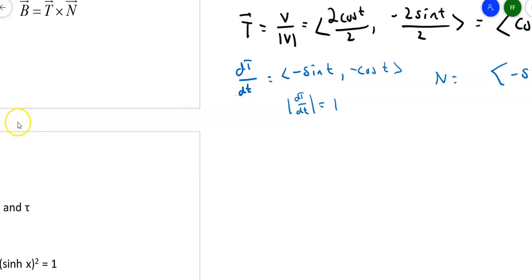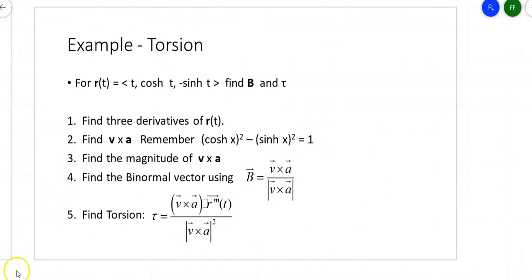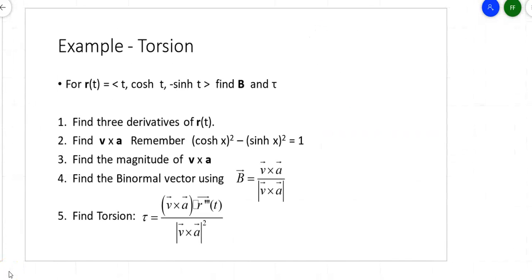Now let's look at a more complicated example involving hyperbolic functions. From Calc 2, hyperbolic sines and cosines follow most of the same rules as unit circle trig, with one key exception: the Pythagorean identity. For regular trig, sin²+ cos²= 1, but for hyperbolics, cosh²T − sinh²T = 1. The curve here is r(t) = (t, cosh t, sinh t), and we want to find the binormal vector and the torsion.